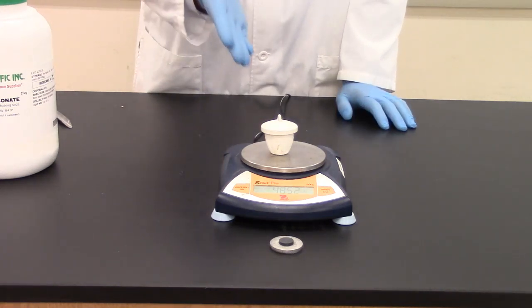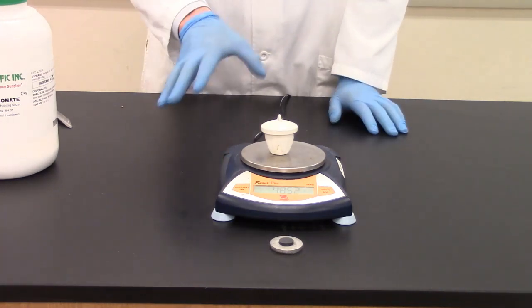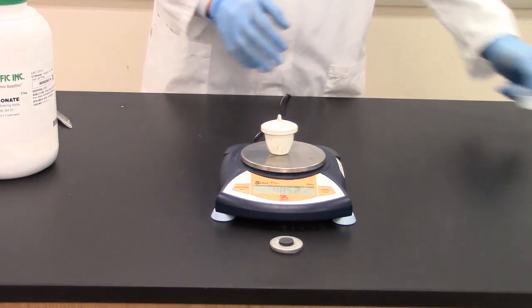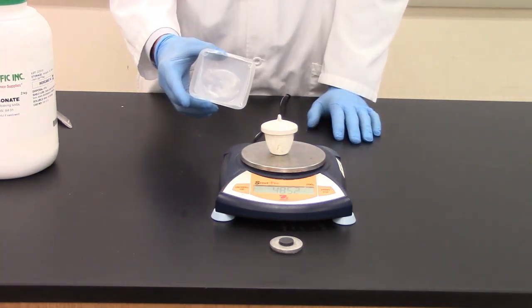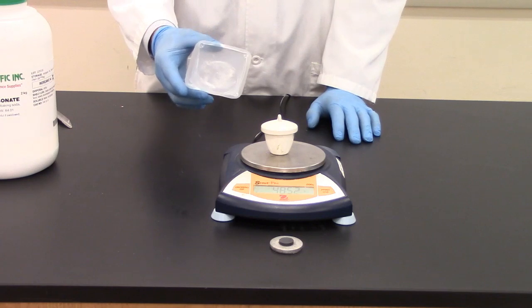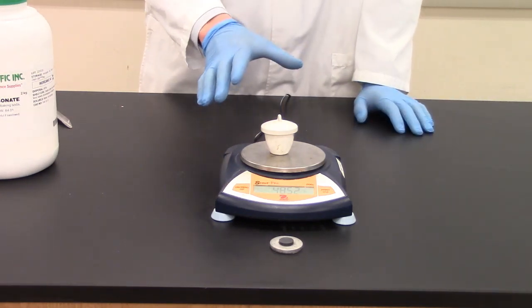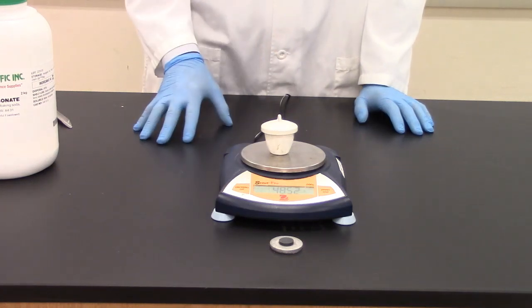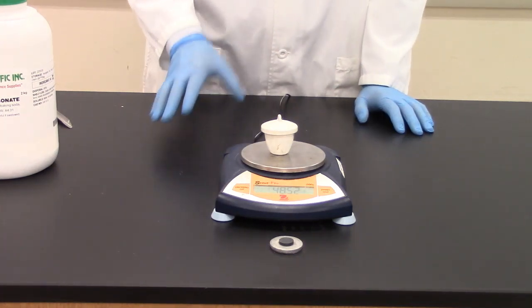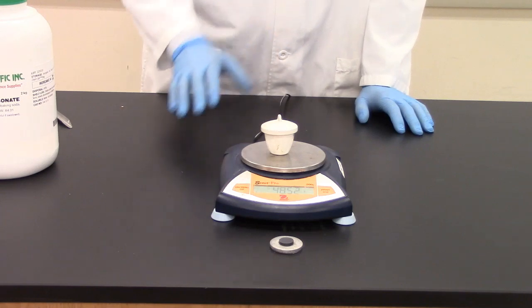So how would I get the mass of just the sodium bicarbonate? We did take a mass earlier but sometimes we get some residue that's left over in the container. We want to be as accurate as possible when we take our measurements. So if I've got the mass of the sodium bicarbonate and the container and then I have the mass of the empty container, how would I get the mass of just the sodium bicarbonate by itself?